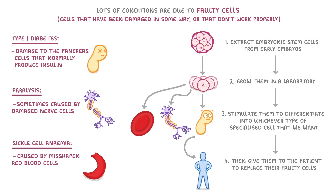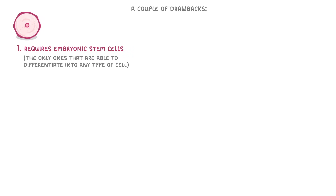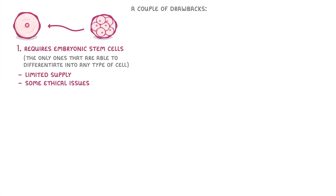This method of using embryonic stem cells sounds great in theory, but in practice it has a couple of drawbacks. The first is that it requires embryonic stem cells, since those are the only ones able to differentiate into any type of cell. However, because embryonic stem cells only come from embryos, there's a very limited supply of them, and there are also some ethical issues around using them.